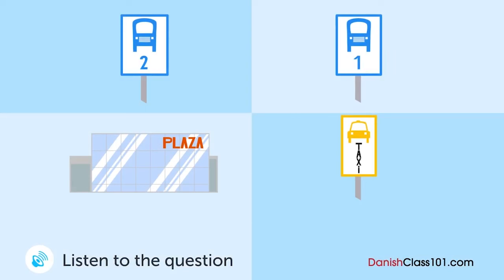En kvinde spørger en mand i turistinformationen om hvordan man kommer til lufthavnen. Hvor går hun hen næst? Undskyld mig, jeg vil gerne ud til lufthavnen. Der er et par måder at komme derud på. Bus nummer et tager omkring halvanden time men er den billigste. Bus nummer to tager 50 minutter fordi den er direkte, men der er kun én i timen og den er lidt dyrere. Der er en taxaholdeplads foran turistkontoret - det tager en halv time, men det er meget dyrere end busserne og de opkræver ekstra for stor bagage. Det er for dyrt for mig. Har du købt noget ved shoppingpladsen under opholdet? De tilbyder gratis shuttle service fra pladsen til lufthavnen for kunder der har foretaget et køb. Det vidste jeg ikke - jeg vil købe souvenirs alligevel.